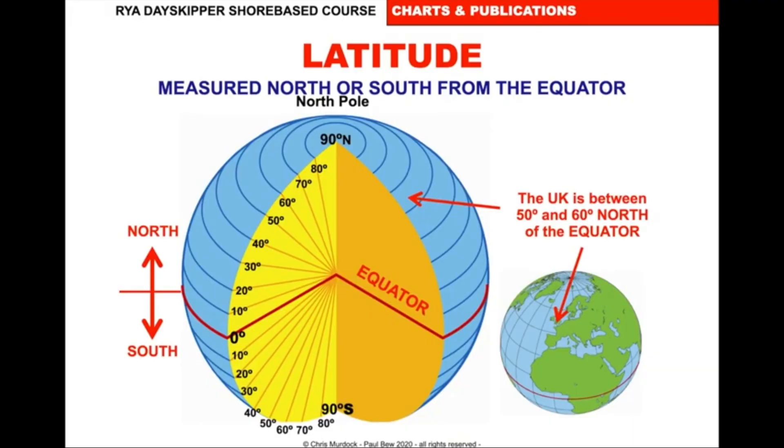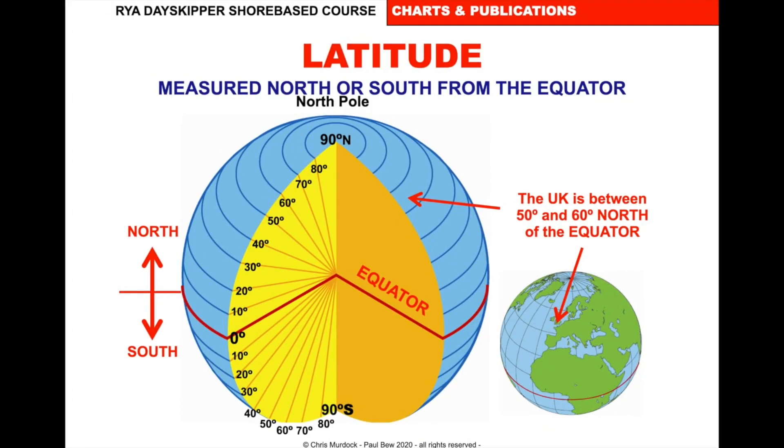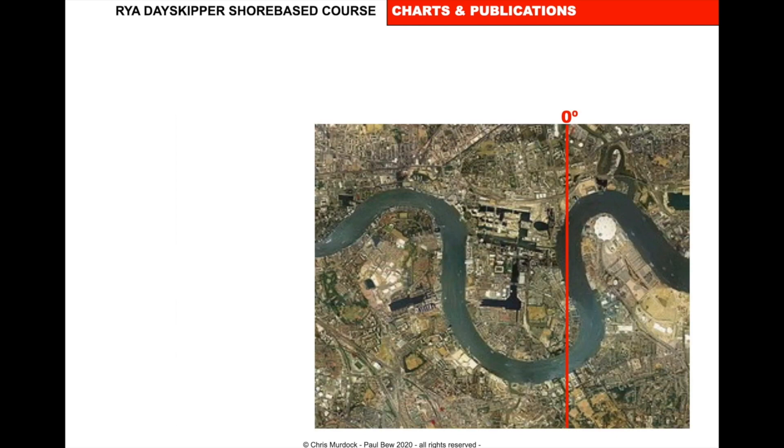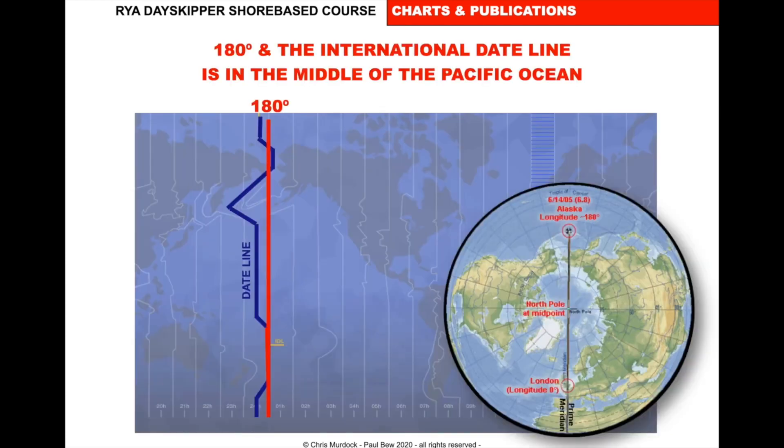So your grid system goes from the equator in the middle, 0 up to north, 90 degrees, down to the south, 90 degrees. So it measures north, south from the equator, 0 to 90, which is your latitude. So the UK here is between 50 and 60 degrees north of the equator. Longitude is measured from the Greenwich Meridian or the prime meridian and it runs through Greenwich and it's measured east and west 180 degrees. So here we can see that the Greenwich Meridian actually runs through the Royal Observatory in Greenwich in London and it meets at the back of the planet at the 180 degrees on the date line.